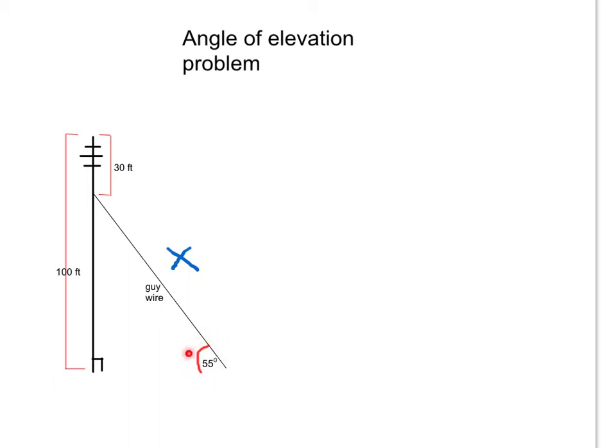From the angle here, the distance I know is the opposite. I can figure out how high up that guy wire is attached to the radio tower. And the thing I want to know is the hypotenuse here. So if I'm working with an angle with the opposite and the hypotenuse, the function is going to be sine.